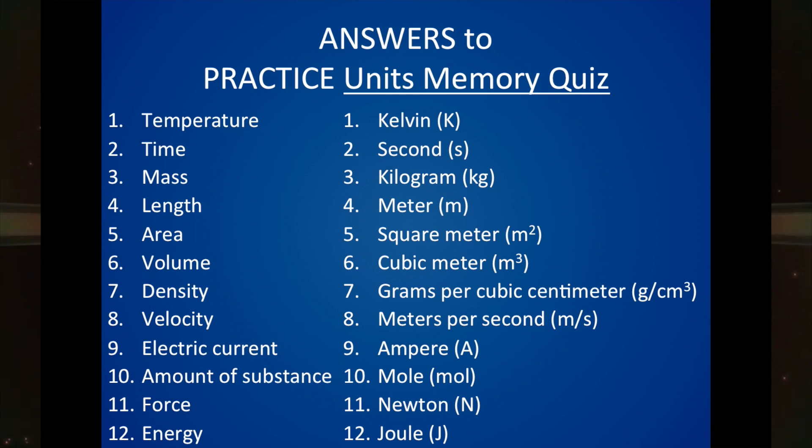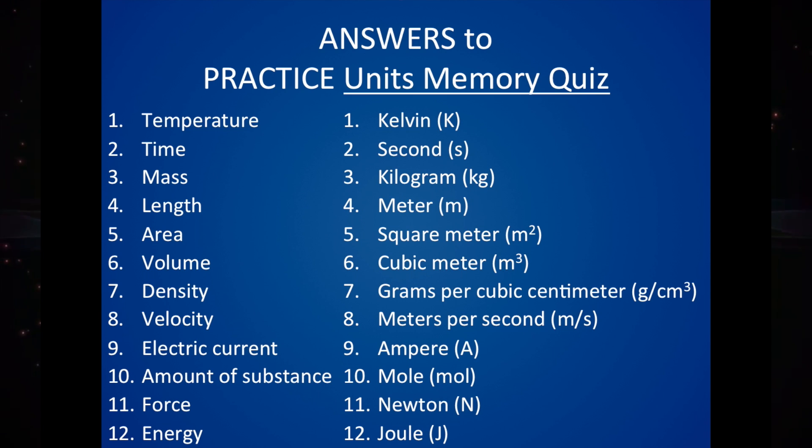Now area and volume are just combinations or derived units from length. And so area is describing two-dimensional length where you take a length and a width and multiply them. So you multiply meters times meters, you get meters squared. And then volume is going to give you your cubic meters because you're going to take length, width, and height all, multiply those together.